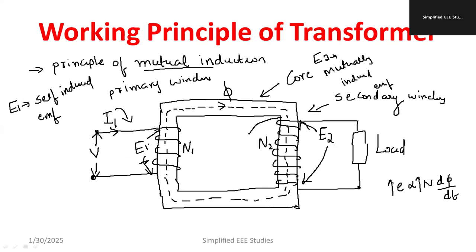In this diagram, the number of turns at the secondary is greater than the number of turns at the primary. So the step-up action will take place here. This type of transformer is known as a step-up transformer.